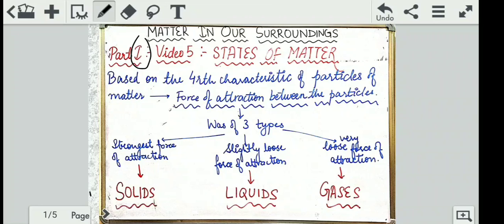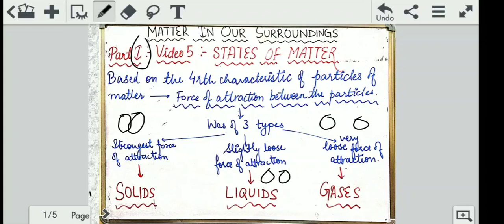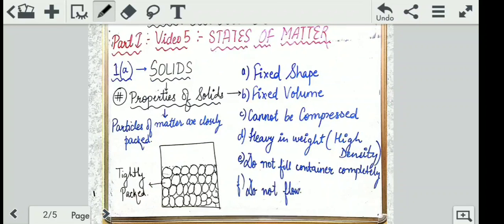Though you have already studied this in your junior classes, I have picked it up from scratch. The ones with the strongest force of attraction — like two very strongly bonded particles — are solids. The ones with a little space between them are liquids, and the ones which are very far apart are gases. This is how solids, liquids, and gases are characterized. Now moving on to the next part where we will start with solids.